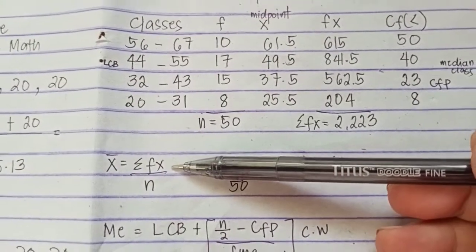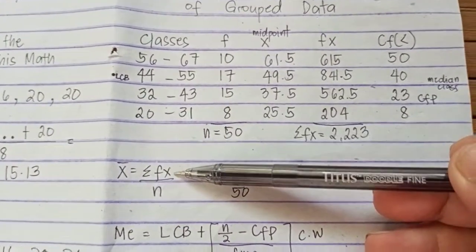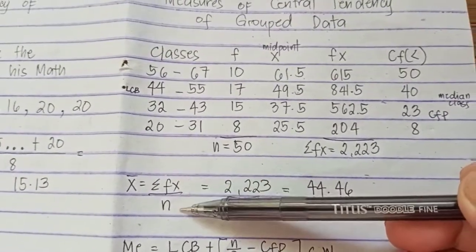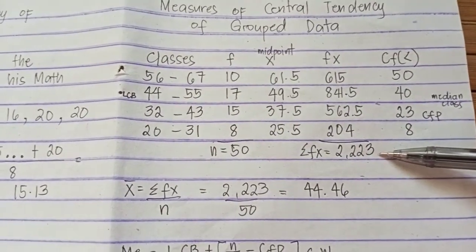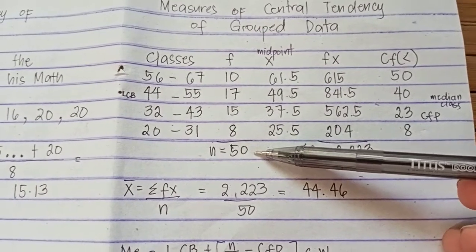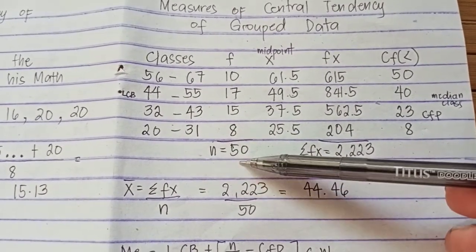So, this is now the formula for the mean under grouped data: summation Fx over N. We know that the summation Fx is 2,223 and the total frequency represented by N is 50.